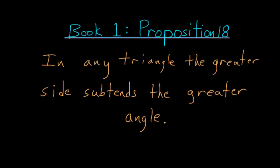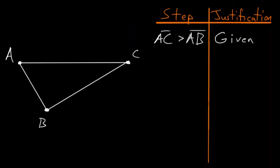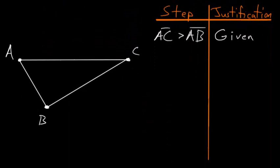So if we start with some triangle ABC, and we know that the side AC is bigger than the side AB, then what we're trying to prove is that this angle ABC that subtends the side AC is bigger than this angle ACB, which subtends the side AB.